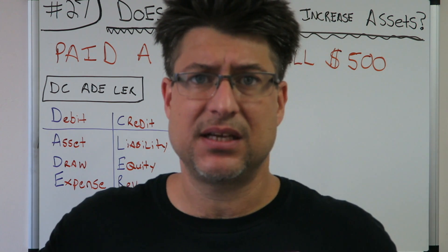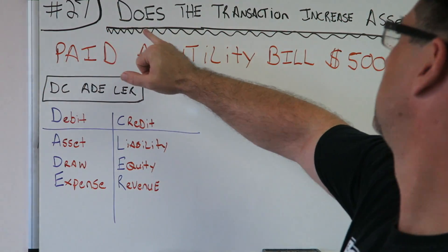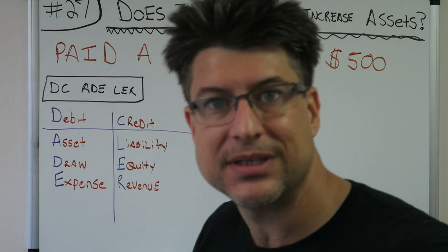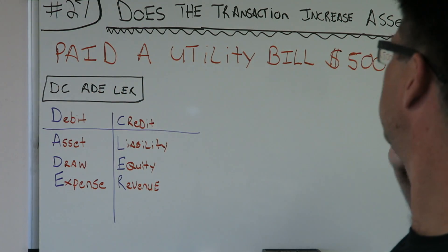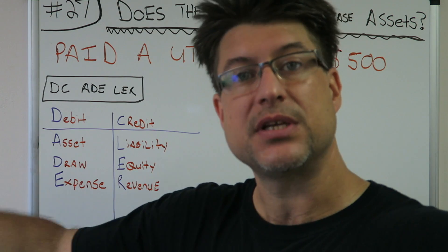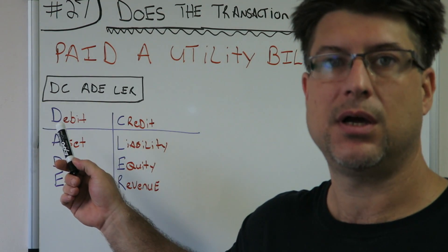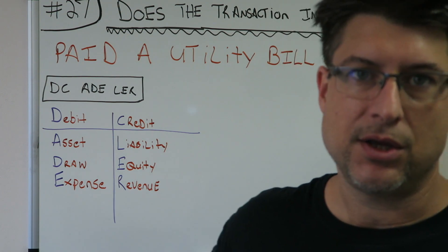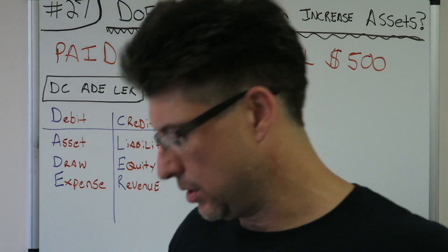This is the last video of 'does the transaction increase assets?' What's the transaction? Pay the utility bill $500. Let's make our journal entry first and then we're going to answer the question. You hurry up and write DC ADE LER on your paper.